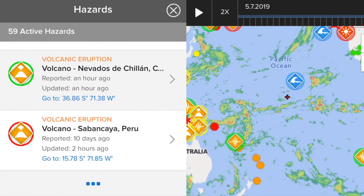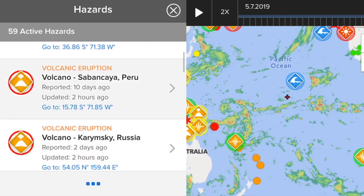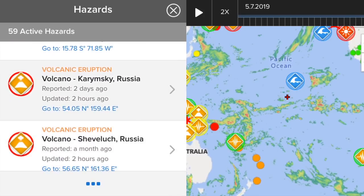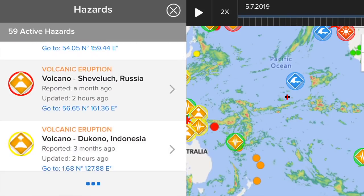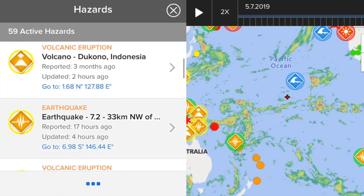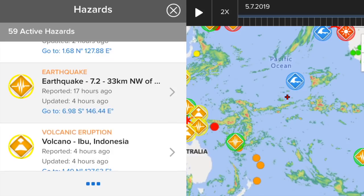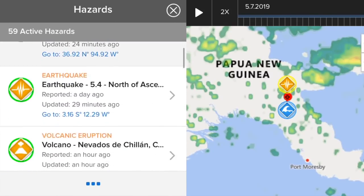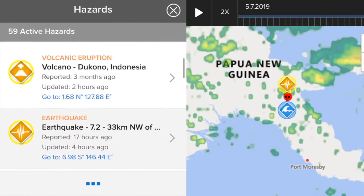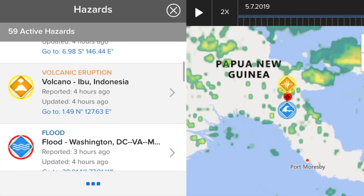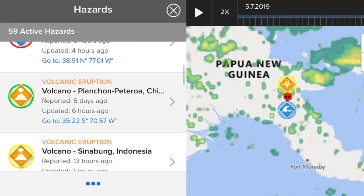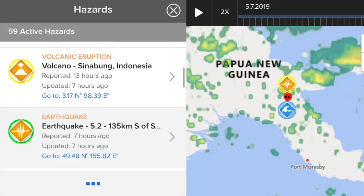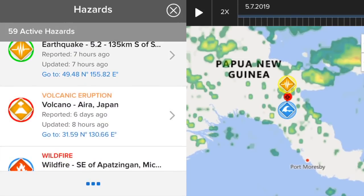Nevados de Chillan in Chile, Sabancaya in Peru, Karymsky in Russia, Sheveluch in Russia, Dukono in Indonesia. Large 7.2 earthquake last night in Papua New Guinea. Look at all these volcanoes: Ibu in Indonesia, Planchon-Peteroa in Chile, Sinabung.